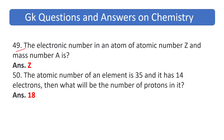The number of electrons in an atom of atomic number Z and mass number A — the answer is Z. The atomic number of an element is 35 and it has 14 electrons, so what will be the number of protons in it? The answer is 18.